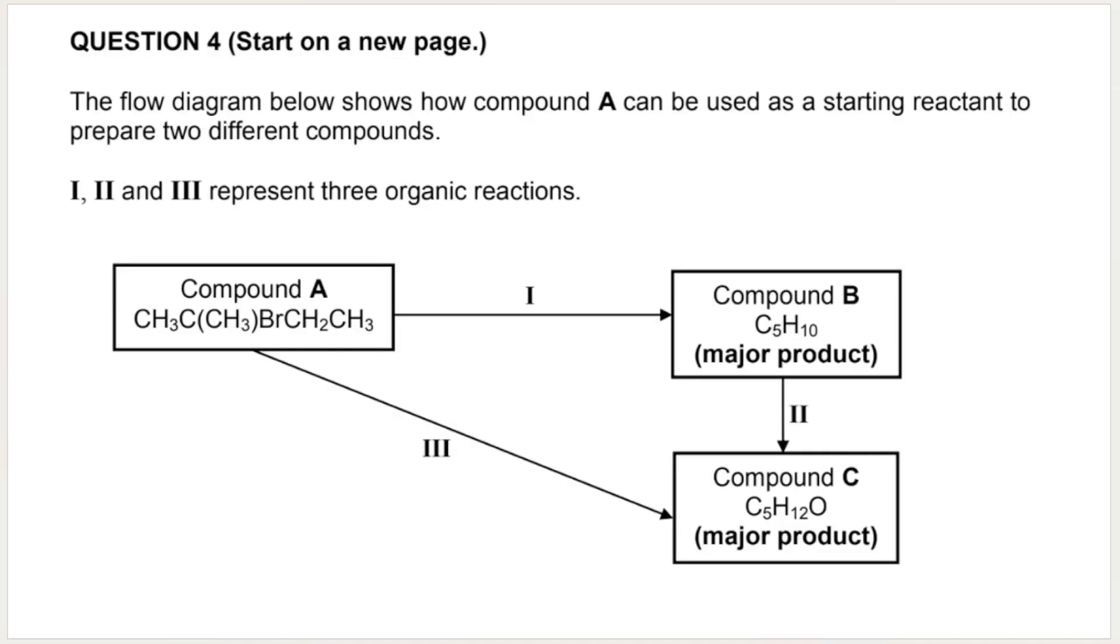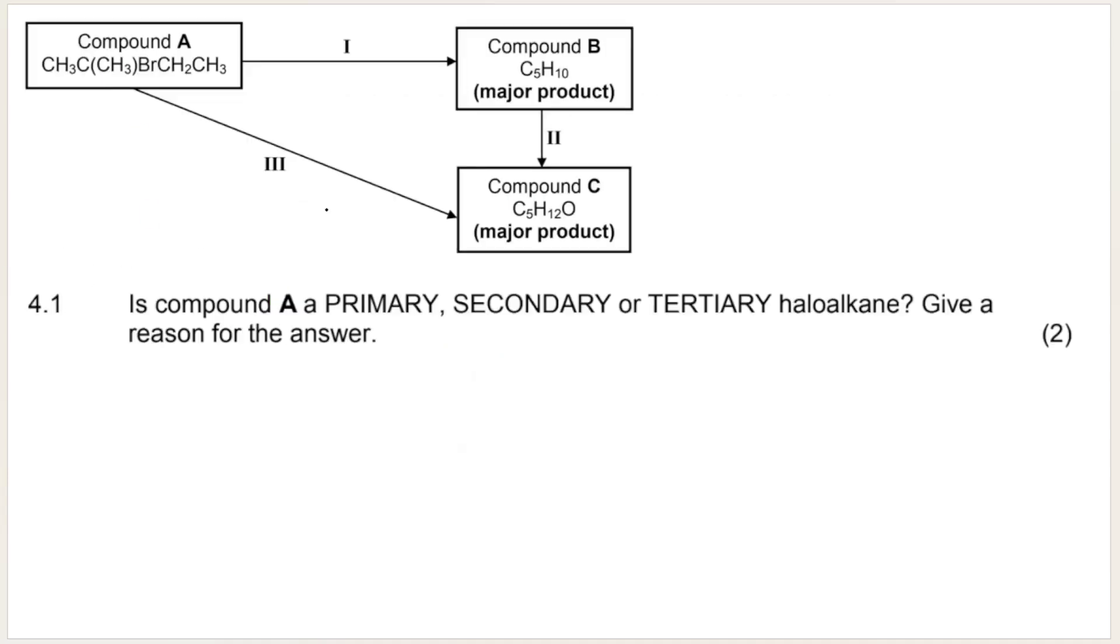So let's jump right in. As I've mentioned in previous videos, they like asking organic reactions in terms of a flow diagram. The flow diagram below shows how compound A can be used to prepare two different compounds, B and C. We've got three different reactions going on over here. First question, is compound A primary, secondary, or tertiary haloalkane? Give a reason for the answer.